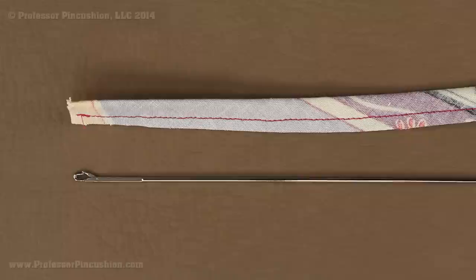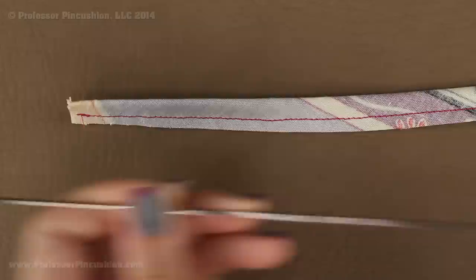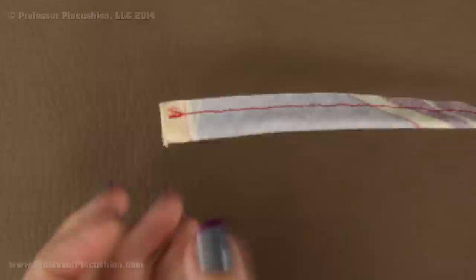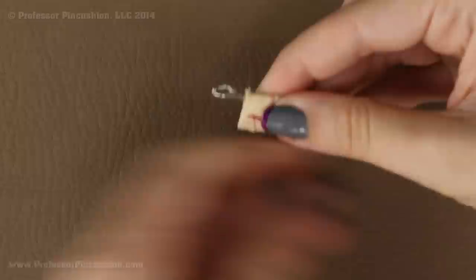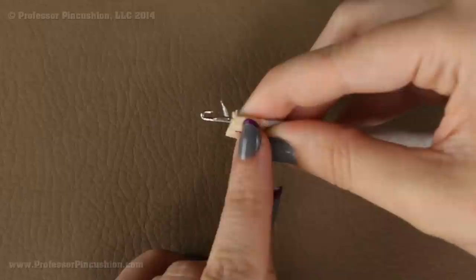Next we have to turn this right side out. There are a couple of different options. The first one I am going to show you is using a loop turner. It is long, skinny, has a hook on one side and a grippy thing on the end. To use this, I am going to put the loop turner, the side with the hook, through the tube until I get to the other side. I am going to open up the hook and hook it on the folded side of the end of the loop.